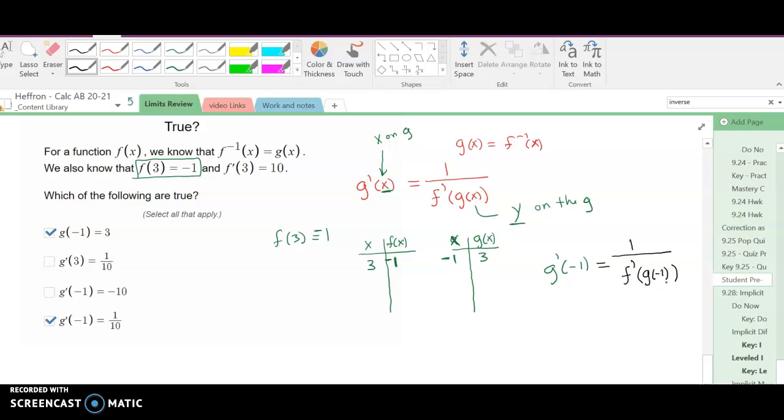Well, notice g of negative one was really three. So we're really looking for g prime of negative one is one over the derivative when x is three.